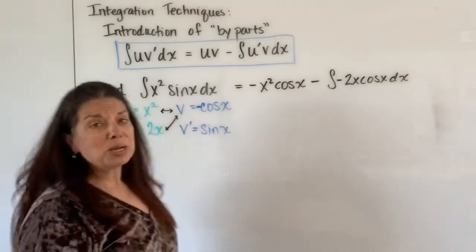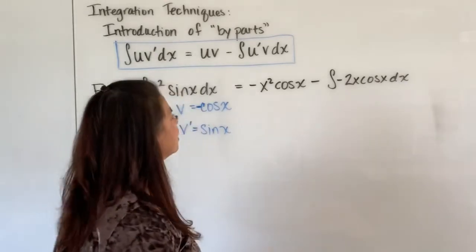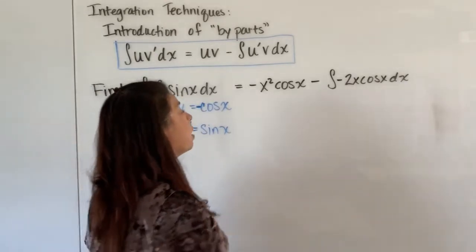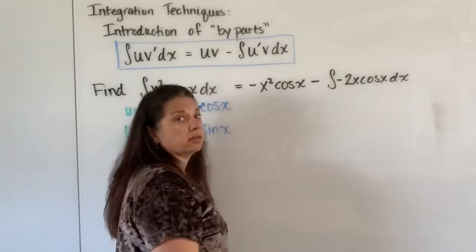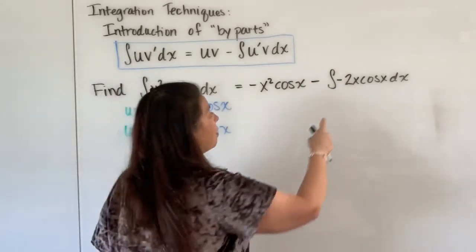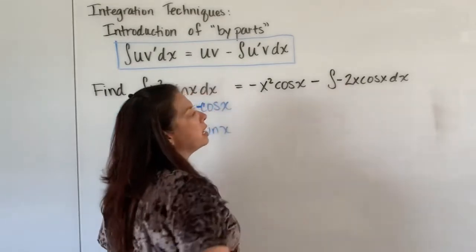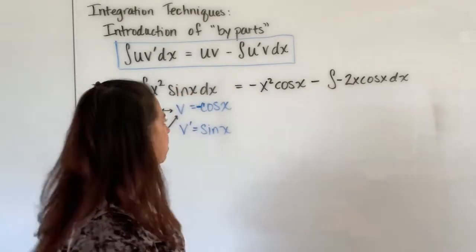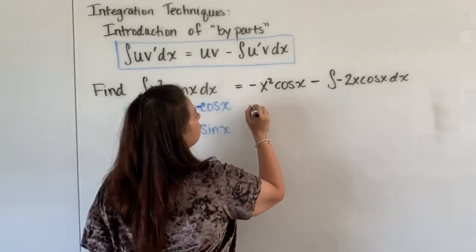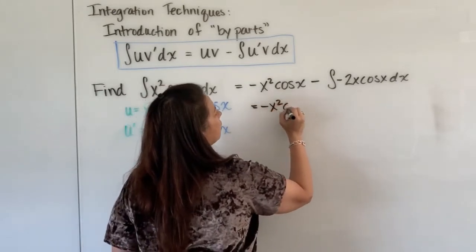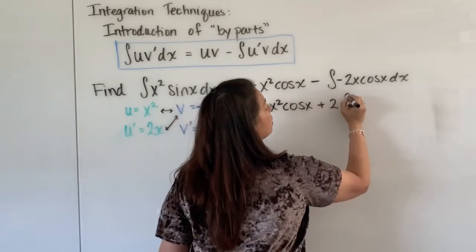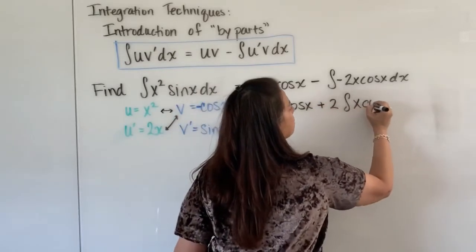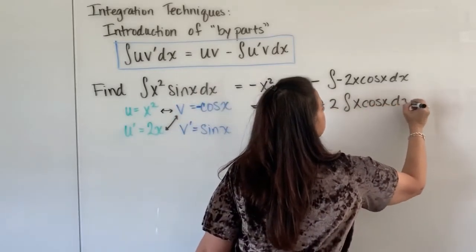Okay so now we want to continue on and we notice a couple things here. One, I've got a negative that just like the last problem I can pull out front of the integral but I also have a 2 that I can pull out in front of the integral so let's just take care of all of that so this is equal to a negative x squared cosine x plus 2 times the integral of x cosine x dx.